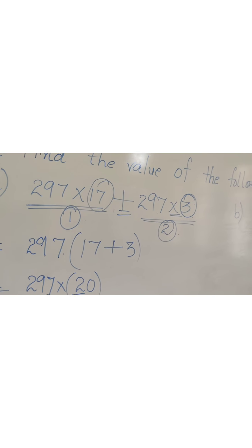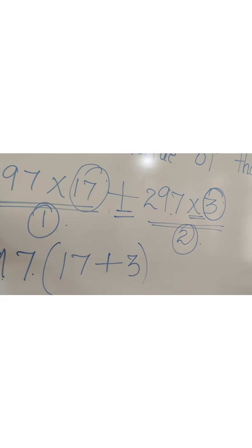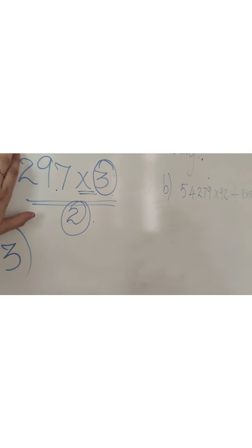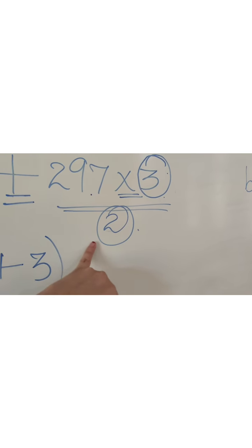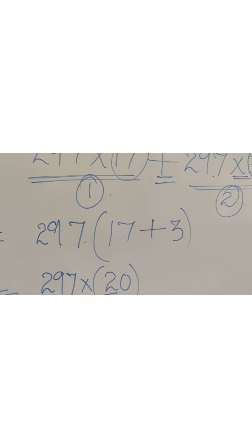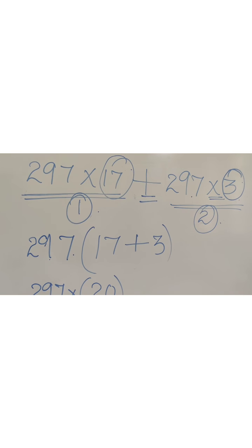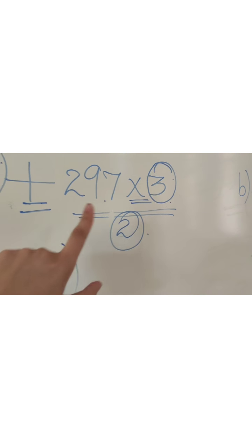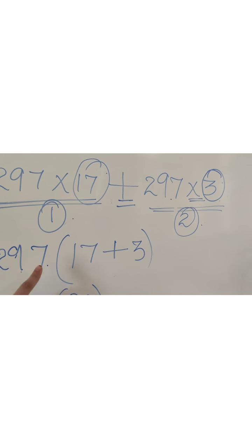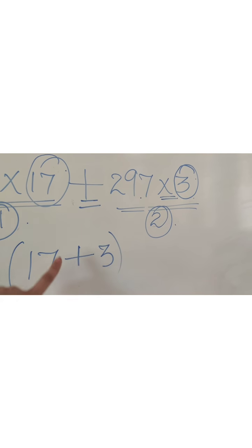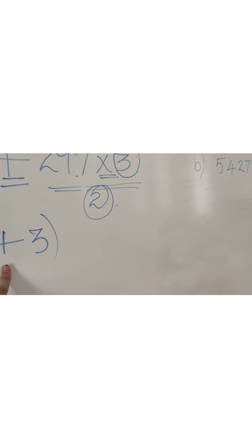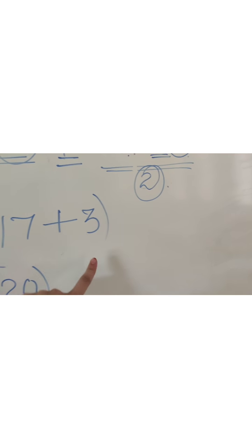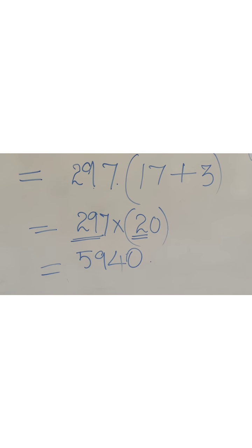So to summarize the steps for such sums: first, make two groups where each has a multiplication sign. Then find the common number between both groups — here 297 appears in both. Take 297 as common. What's left is 17 and 3. Solve the bracket: 17+3=20. Then multiply 297×20 to get the answer.